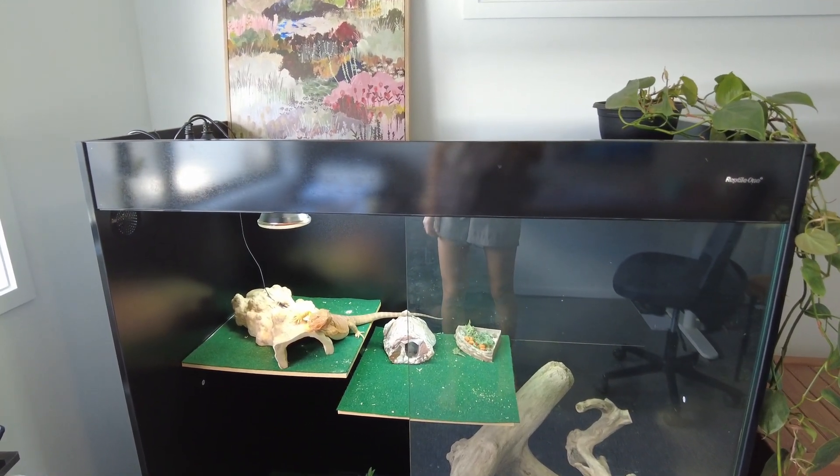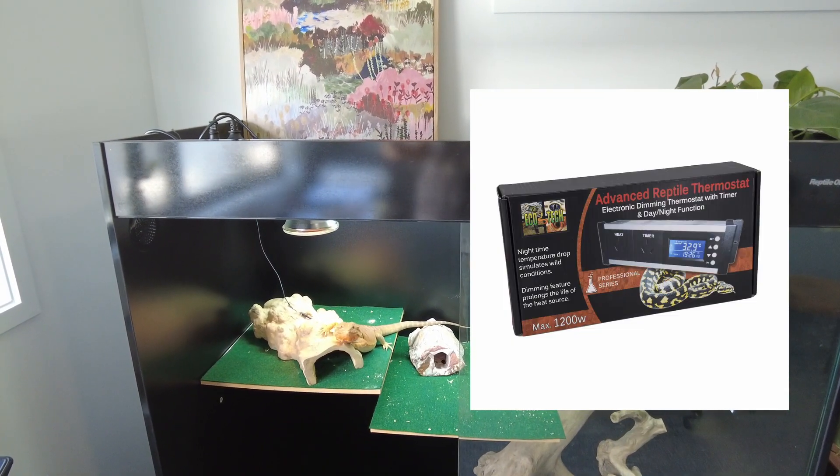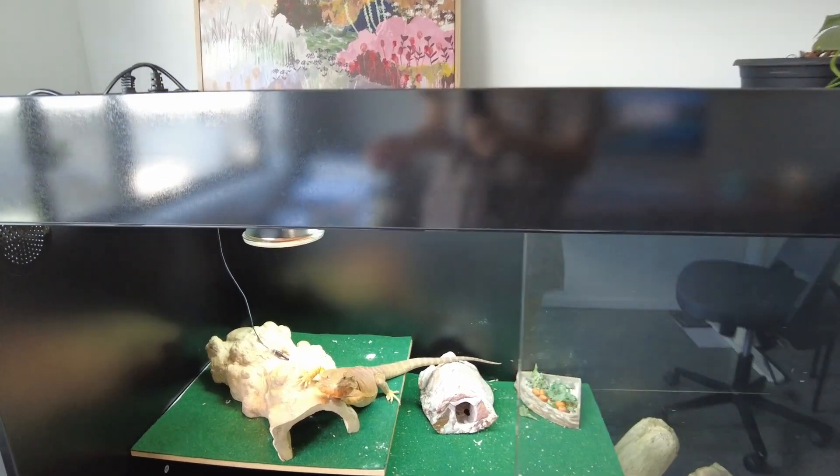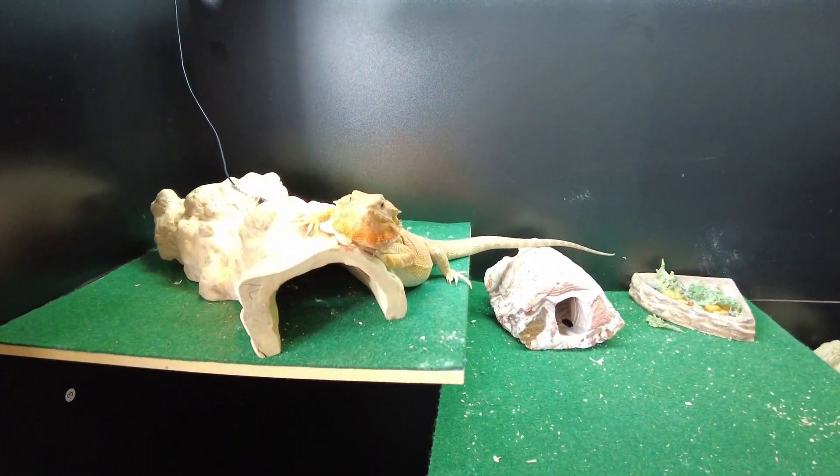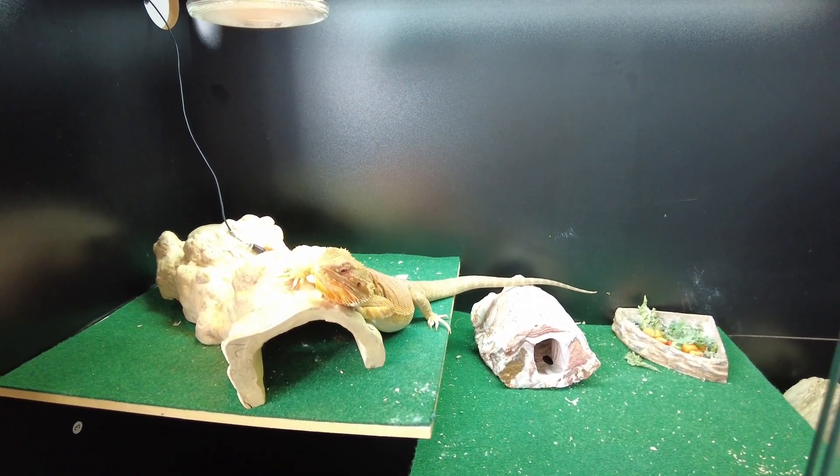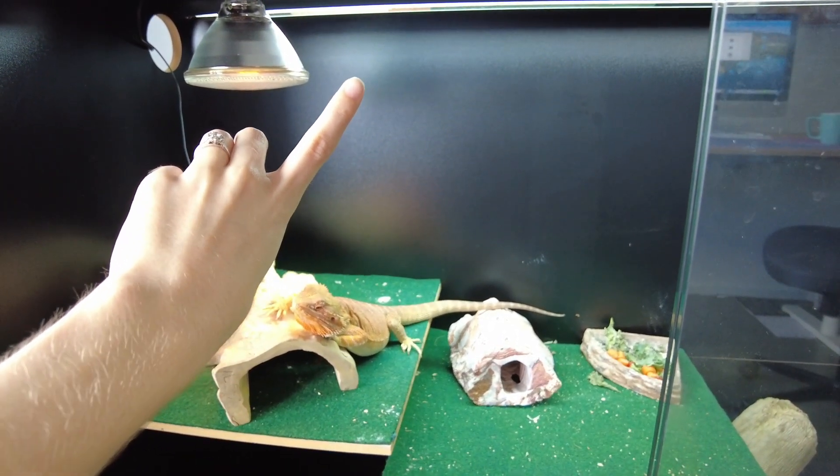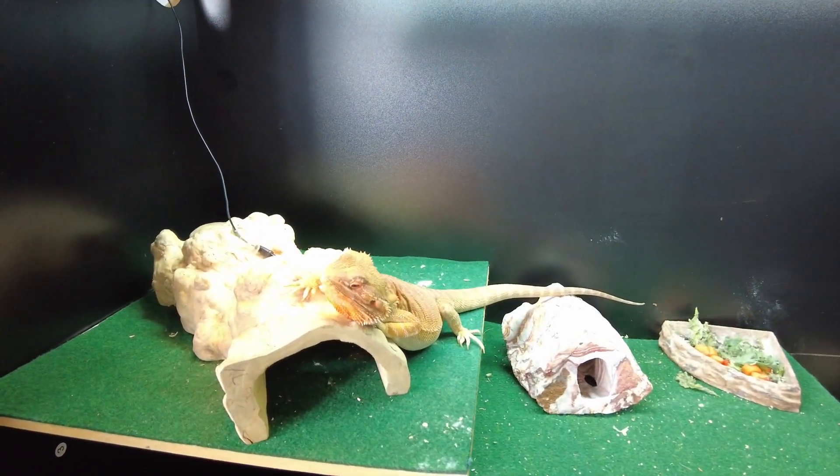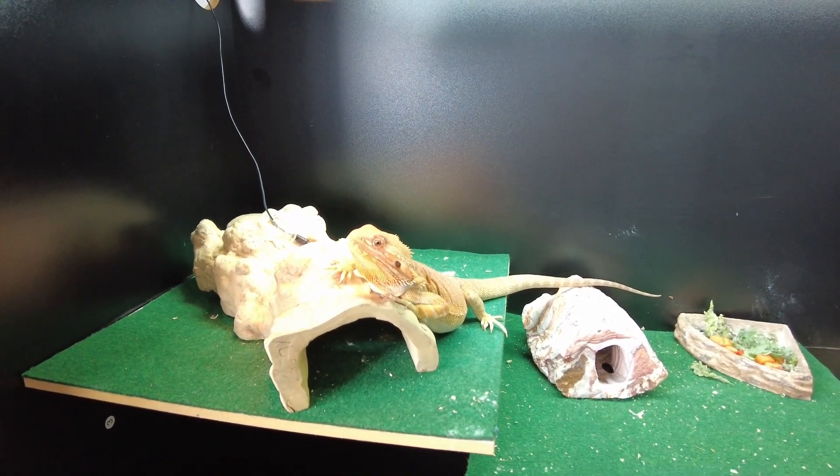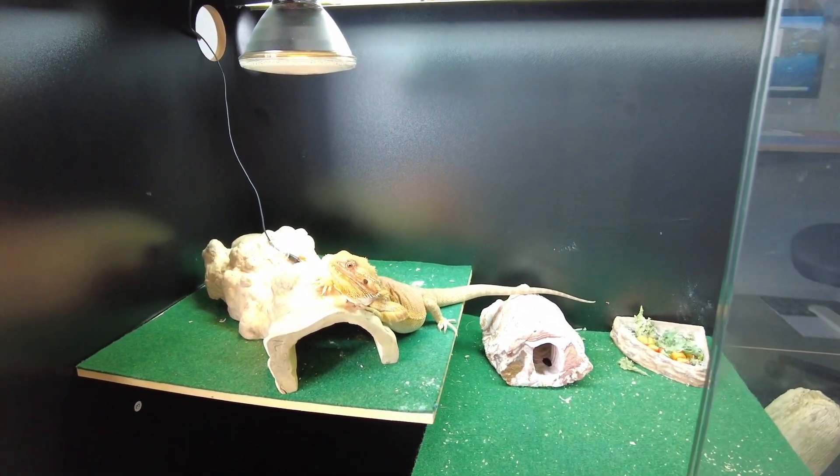All right, so today we're going to talk about how to set up a day and night dimming timer for our bearded dragon. We've got little man in here and we're going to talk about how we get the heat lamp and the UVB to turn on in the daytime and be the desired heat that we want, and then also how to set it up so those things can turn off.